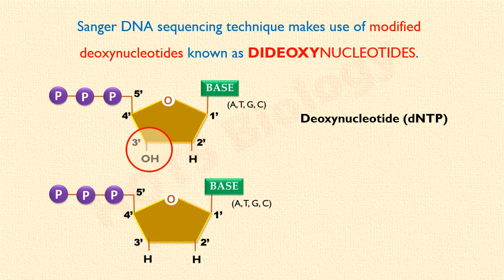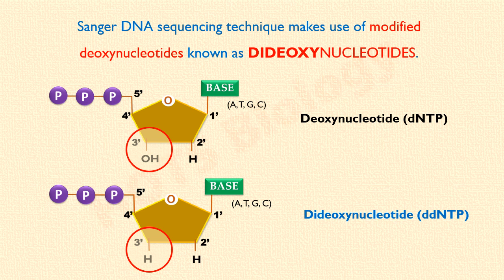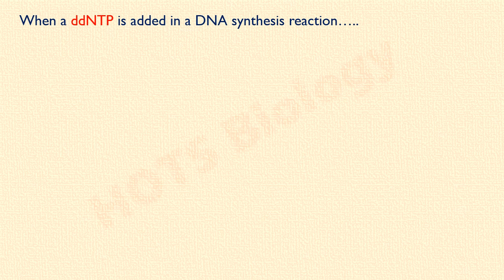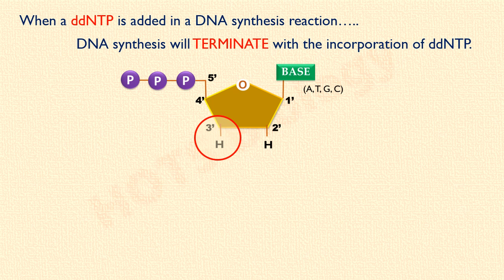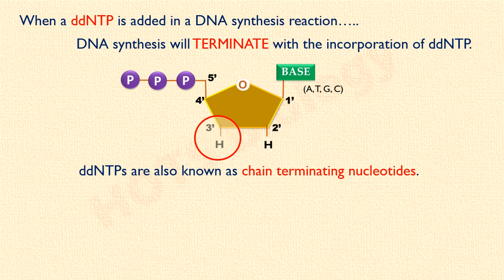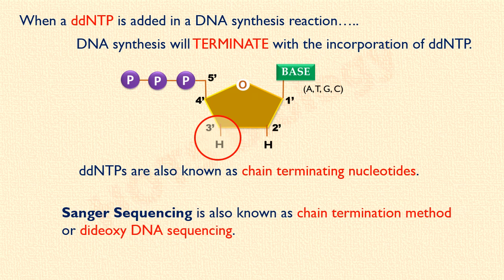Now look at this image. Here, the hydroxyl group is absent at the 3' position of the sugar. Instead, there is a 3' hydrogen. This is a dideoxynucleotide. If in a DNA synthesis reaction a dideoxynucleotide is added, the DNA synthesis will terminate with its incorporation. This is because now there is no 3' hydroxyl group for further extension of the DNA chain. For this reason, dideoxynucleotides are called chain termination nucleotides. And Sanger technique is also known as the chain termination method or dideoxy DNA sequencing.